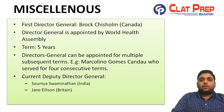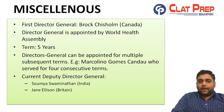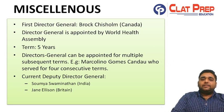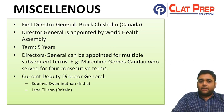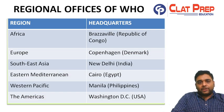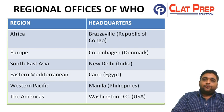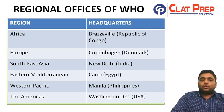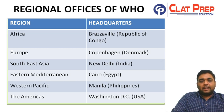Lastly, the first Director General of WHO was Brock Chisholm, who belonged to Canada. The Director General is appointed by the World Health Assembly for a term of 5 years, and can be appointed for multiple subsequent terms. Currently, the Deputy Director General of WHO is Indian national Soumya Swaminathan. WHO's regional offices cover Africa, Europe, Southeast Asia, Eastern Mediterranean, Western Pacific, and the Americas. The Southeast Asian regional office is in New Delhi.